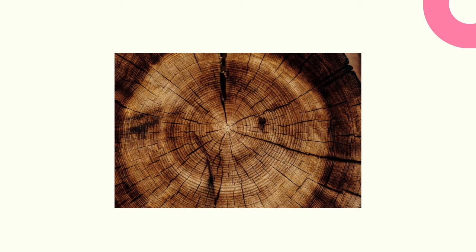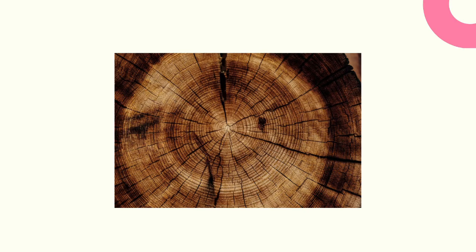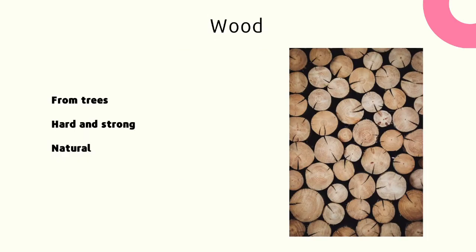Look at this picture — what do you think this is? Well done, it's wood! We get wood from trees, so it's a natural material. It is also hard and strong, therefore we use it to make furniture.